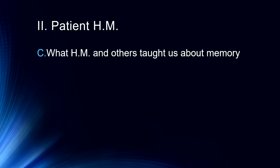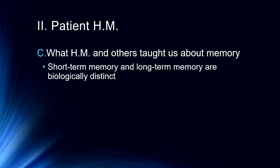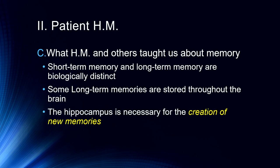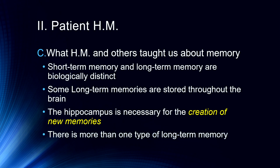Here's what patient H.M.'s case taught us about memory. First, short-term memory and long-term memory are biologically distinct — Henry Mollison had perfectly intact short-term and working memory and was able to think and manipulate information. We also understand that some long-term memories are stored throughout the brain, as Henry could still remember a great deal of his childhood and events prior to his surgery. We know the hippocampus is necessary for the creation of new memories — it's the critical structure by which experiences get processed into long-term memory. And we know there is more than one long-term type of memory: conscious explicit memories, and implicit or unconscious non-declarative forms not tied to specific times and places.